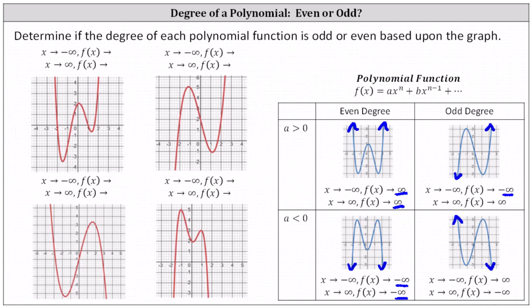Going back to our problem, for the first polynomial function, notice for both the left- and right-hand behavior, f of x increases without bound, and f of x approaches positive infinity. In this case, we know the polynomial has an even degree, and the leading coefficient a is positive. The question doesn't ask about the sign of a, but I'm going to go ahead and include that information.